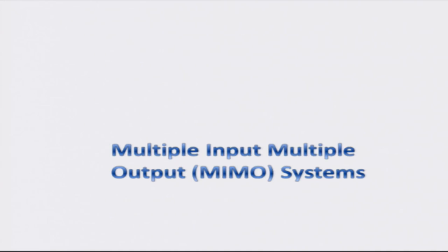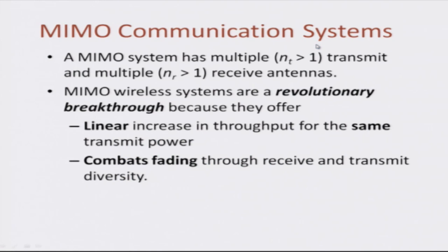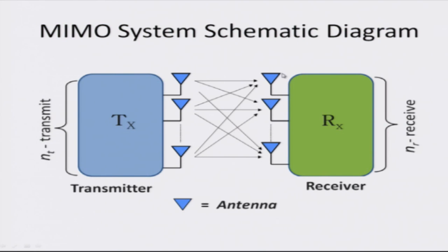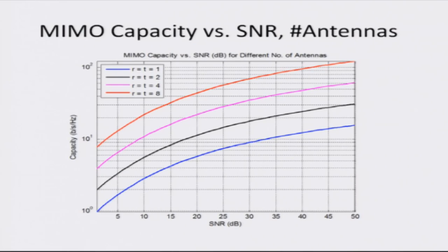Another important technology which makes high data rates possible in 3G and 4G wireless communication systems is what is known as Multiple Input Multiple Output, or MIMO, systems. Simply put, these involve having multiple antennas at the transmitter and multiple antennas at the receiver. It can be shown that when you have multiple antennas at both ends, as shown in this slide, you create a large number of independent spatial channels — additional spatial pathways to transmit multiple information streams between the transmitter and receiver. As a result, you can pump data at a much higher rate.